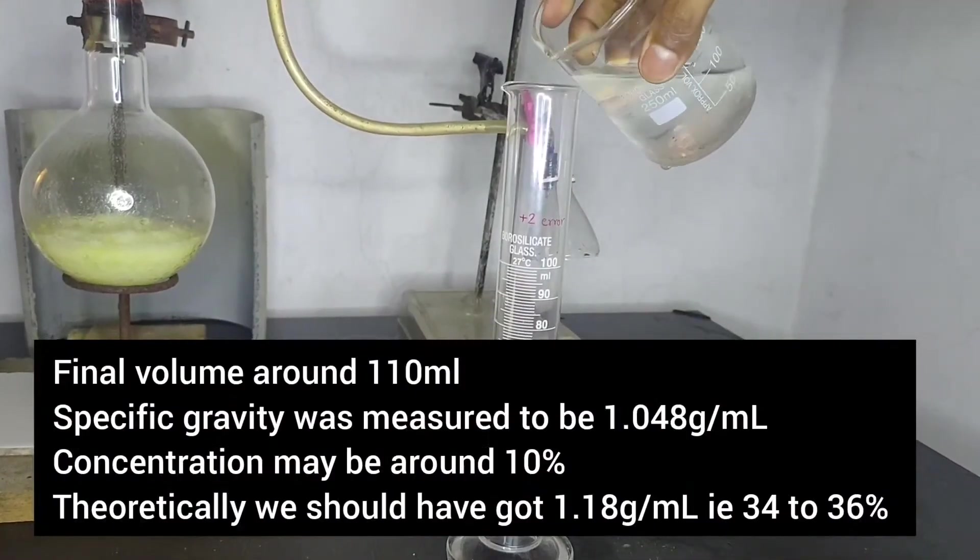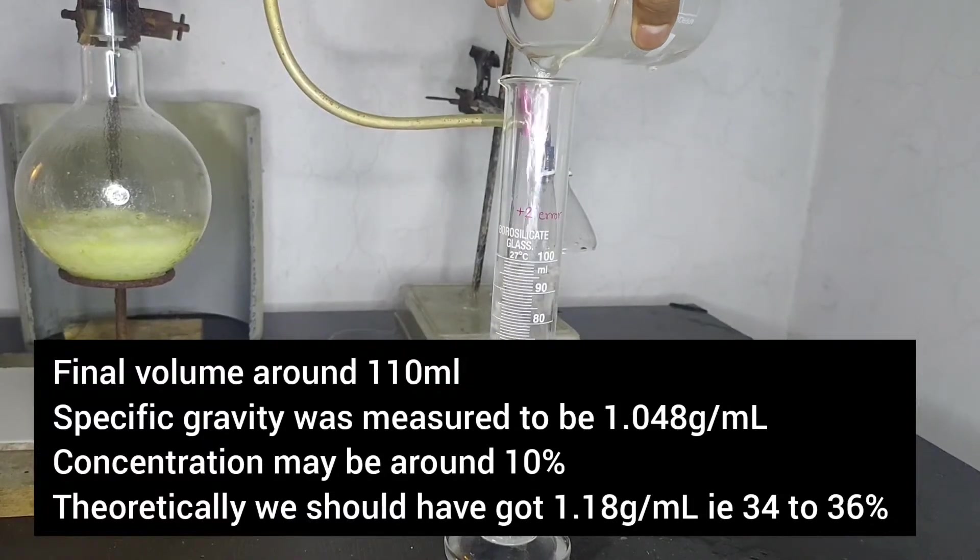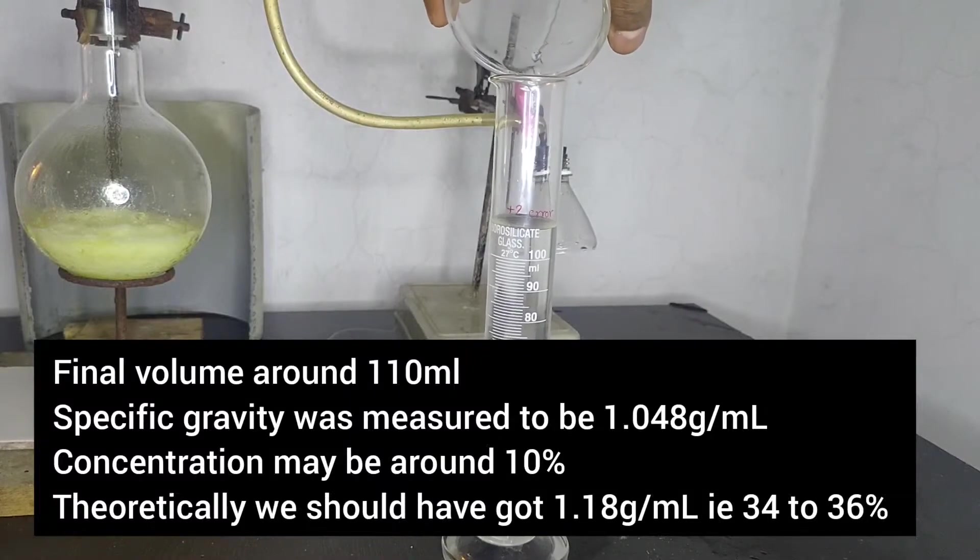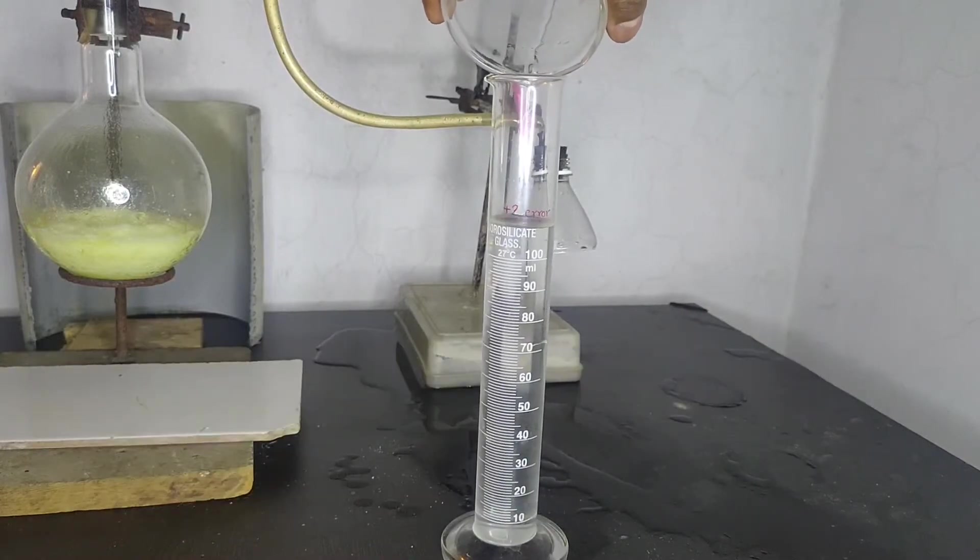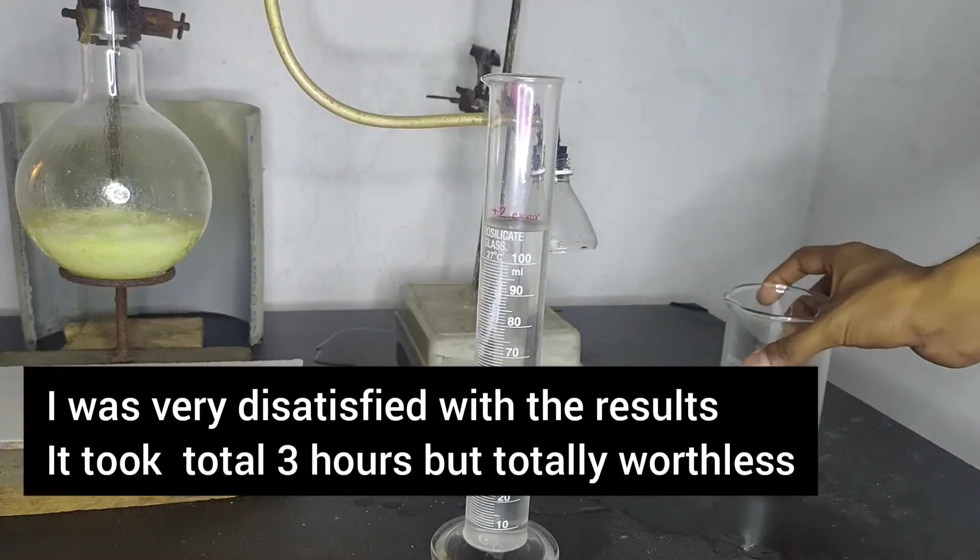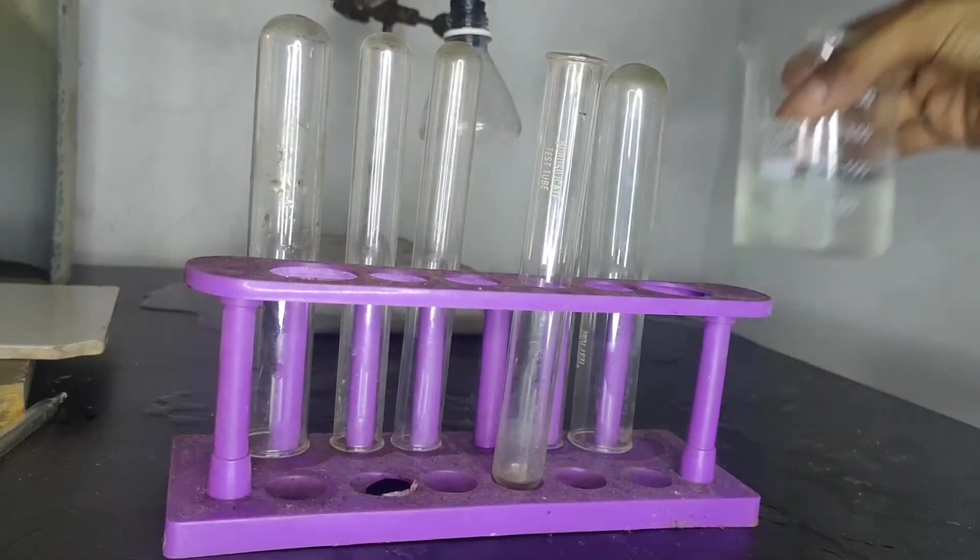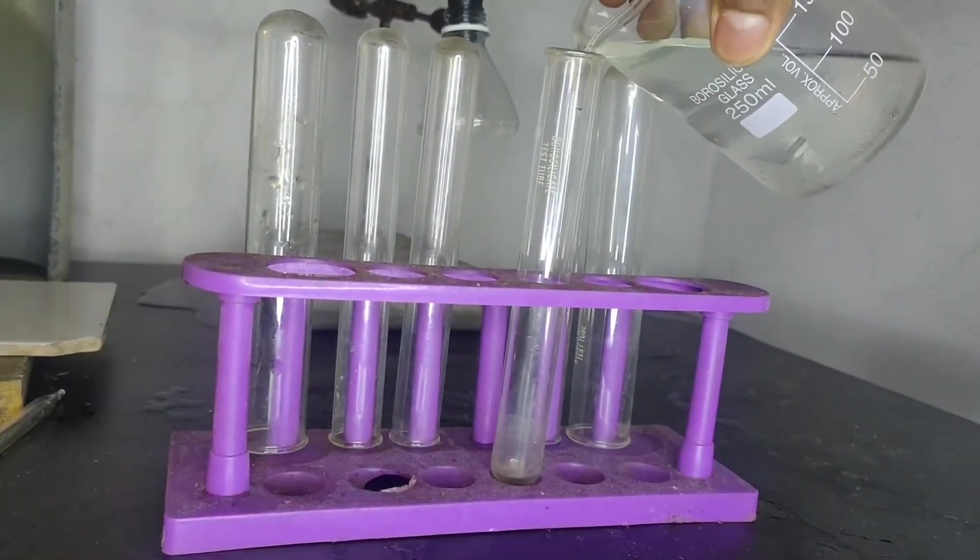So, I have got 110 ml of hydrochloric acid, whose specific gravity was measured to be 1.048 gram per ml, which corresponds to concentration of around 10%, which is very low than the theoretical 35-36%. And I was totally dissatisfied with the results. It took me around 3 hours to do the whole experiment.